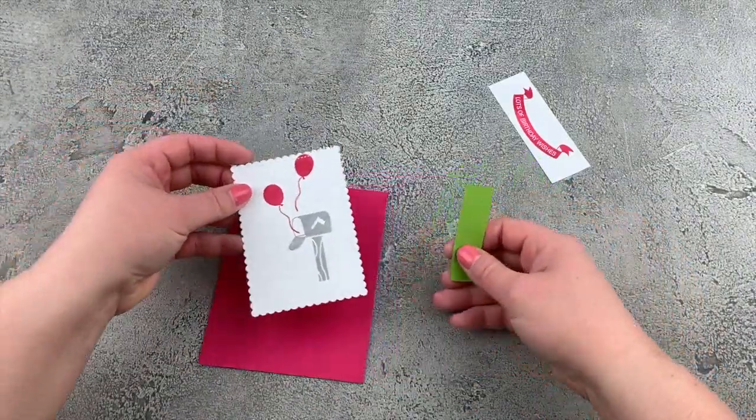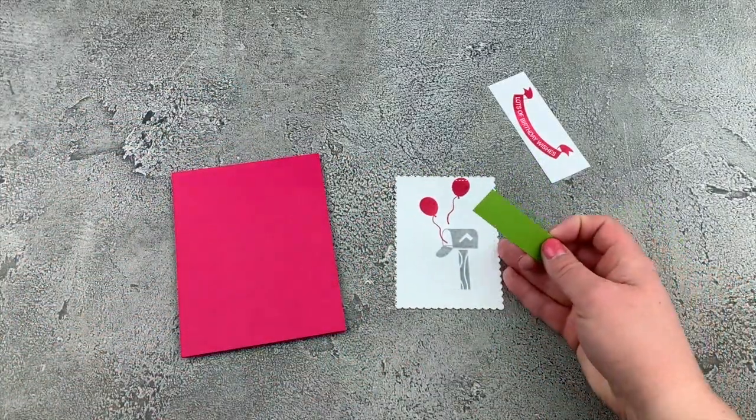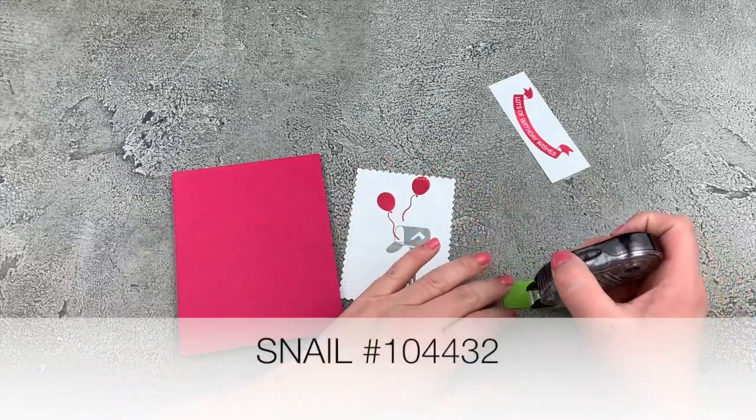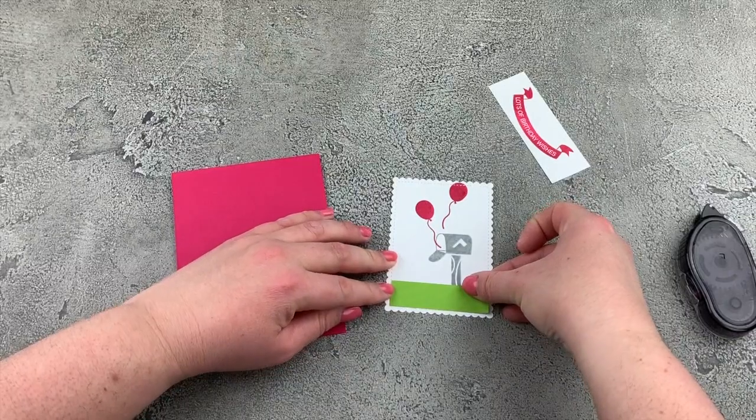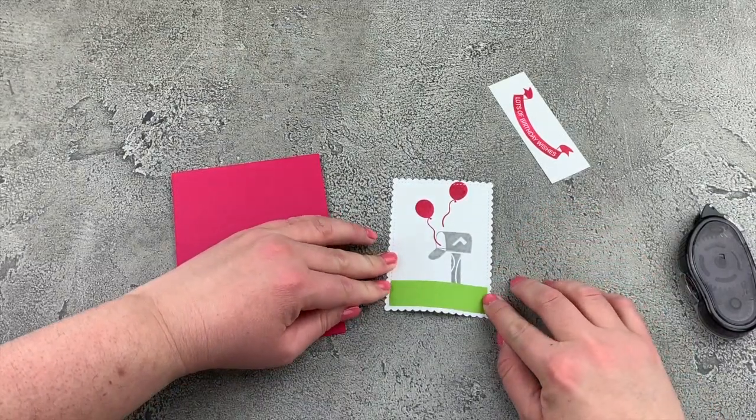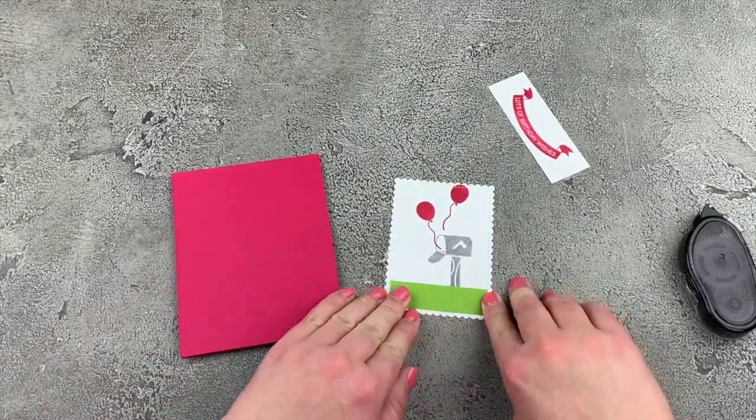So we can just start putting these pieces together. I have my piece of Granny Apple Green and we'll stick that on with a Tape Runner adhesive. I'm using Snail. There we go. Stick that down.